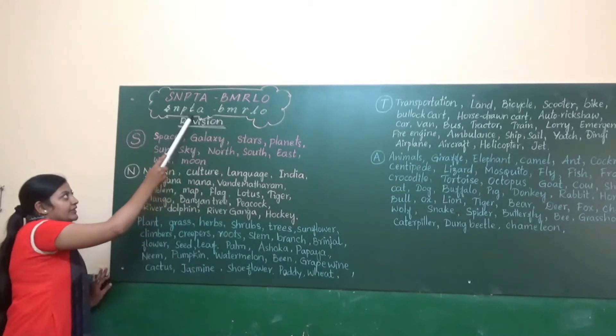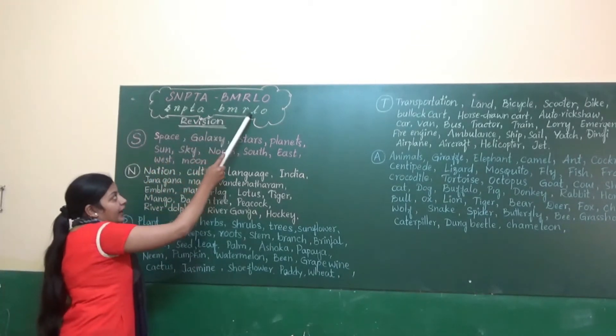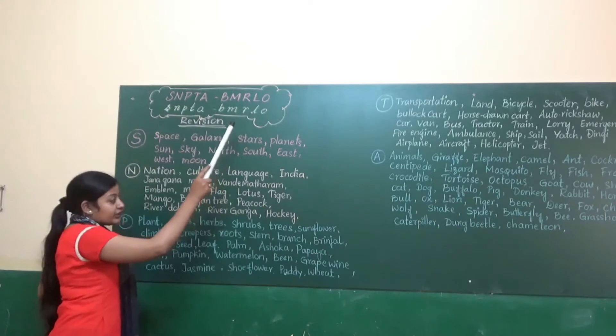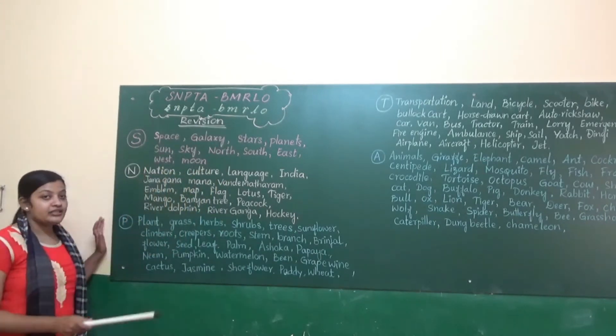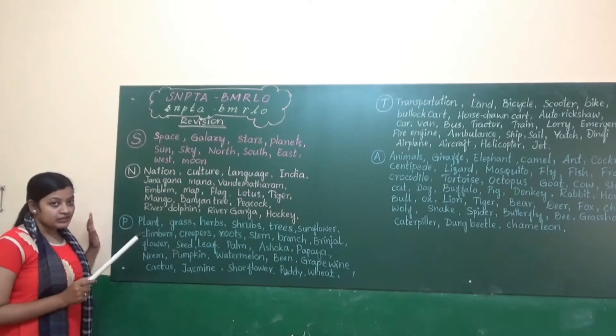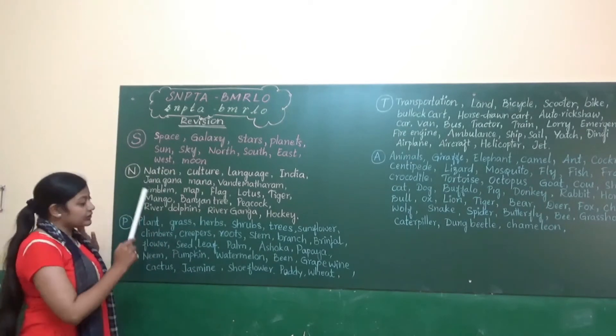S, N, P, T, A, B, M, R, L, O — these are the lowercase letters. Make sure to introduce your kids with a capital letter as well as the small letters.